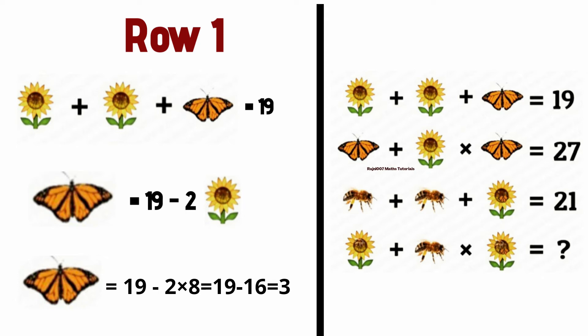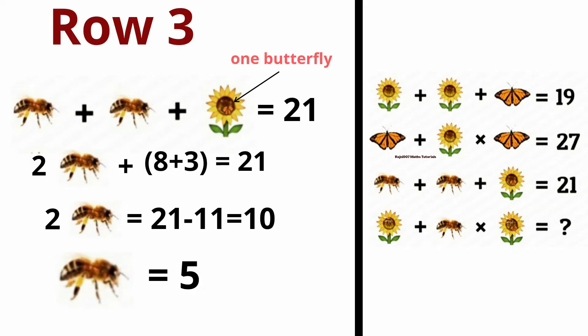So what is butterfly value? 19 minus two times sunflower value, 19 minus 16. This butterfly value is 3. Butterfly and sunflower value is 3, and so we will take place in third row.